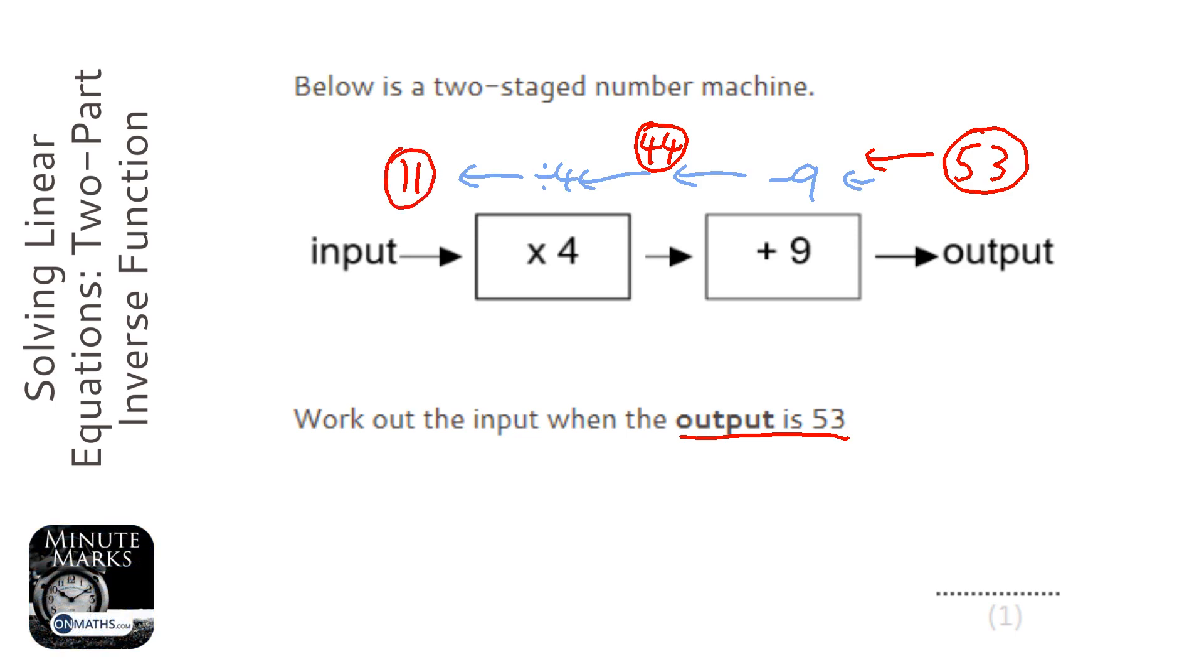And we can check that by putting it back through the number machine, and we should get 53 out. So 11 times 4 is 44, 44 plus 9 is 53. So our input is 11.